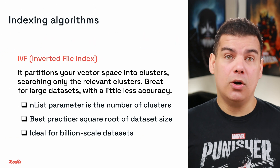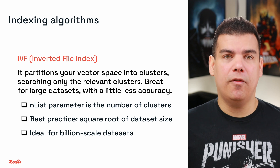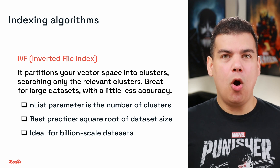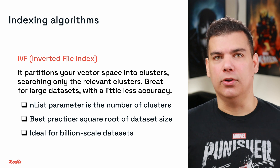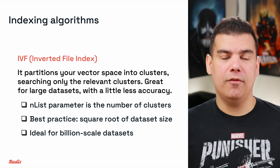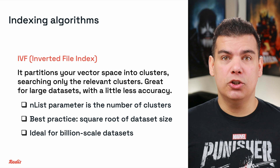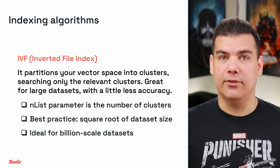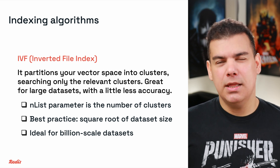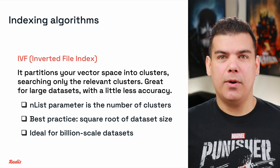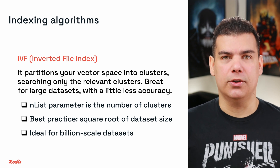The other algorithm is called IVF, or Inverted File Index. This algorithm partitions your vector space into clusters, searching only the most relevant clusters. These scale better to billion-scale datasets, but trade some accuracy. The key parameter is called N-List, which is the number of clusters.